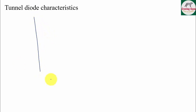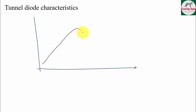Tunnel diode characteristics were asked — a similar question was asked in the mock test too. The characteristic curve of a tunnel diode shows a specific shape with a peak point and a valley point.